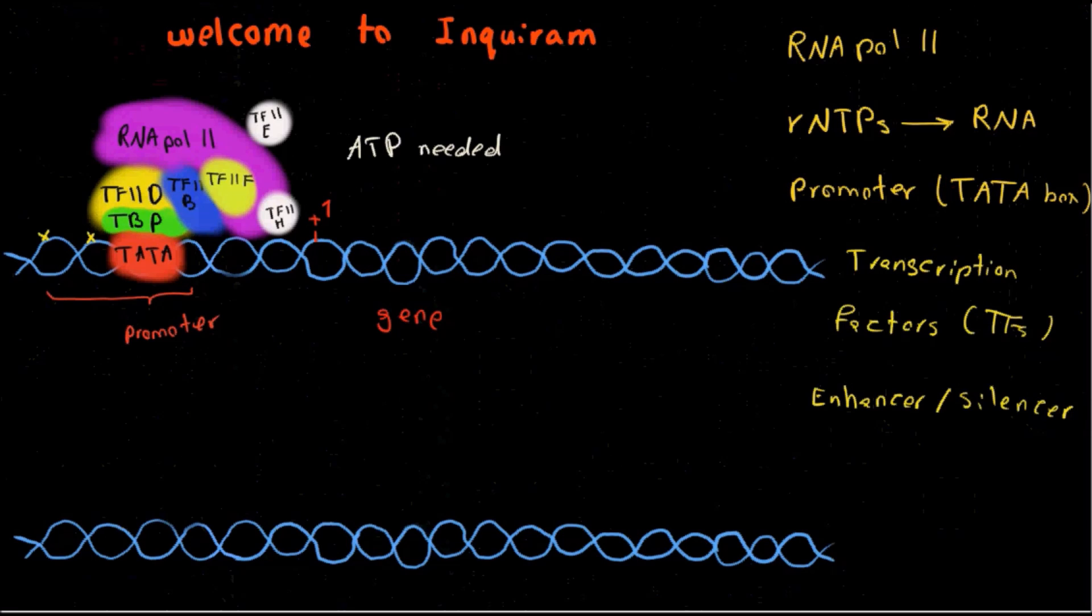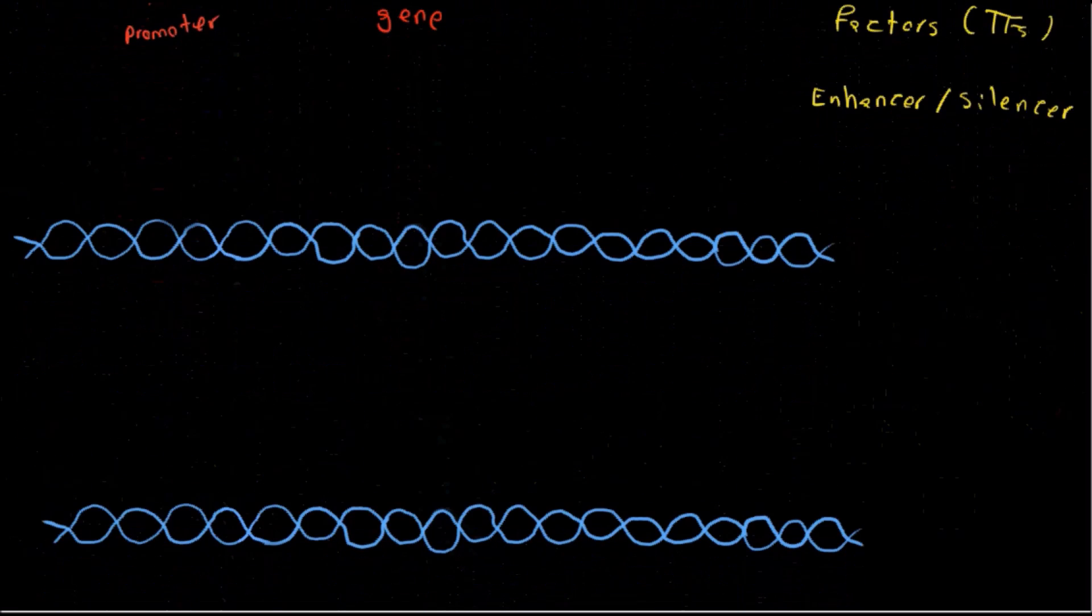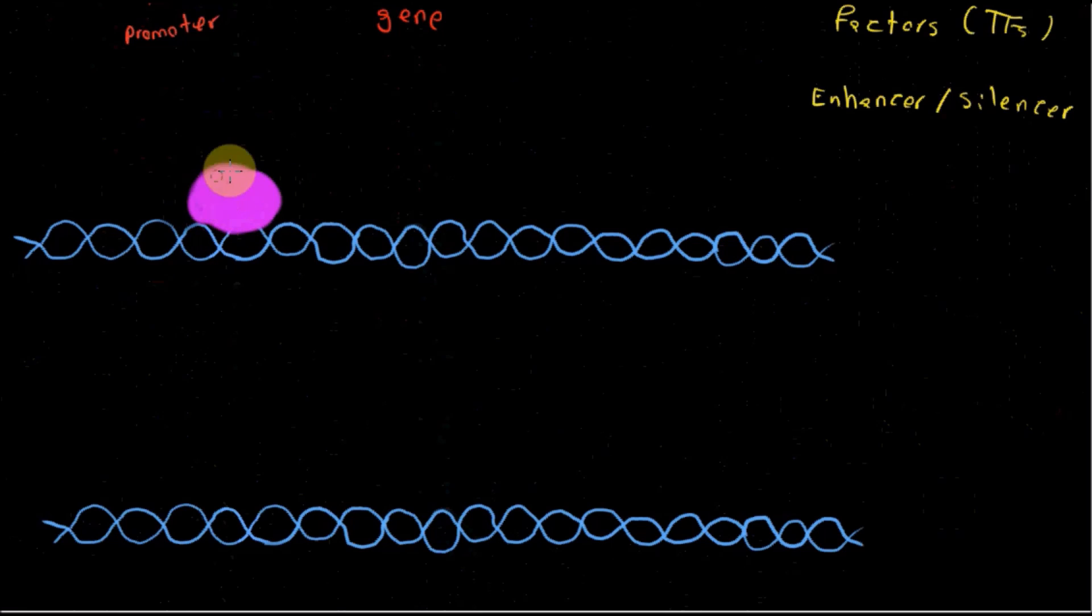After initiation stage we have elongation stage, which I'm going to draw for you over here. For simplicity, I used the same color for the entire complex, the same color I used to represent RNA polymerase. And I put it here. This whole thing is RNA polymerase and the complex.